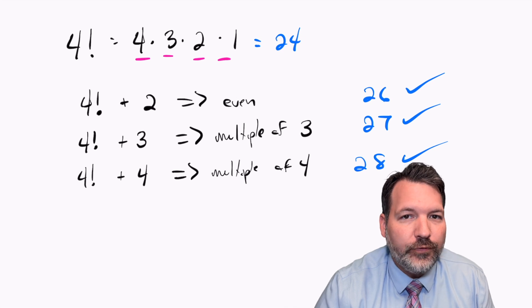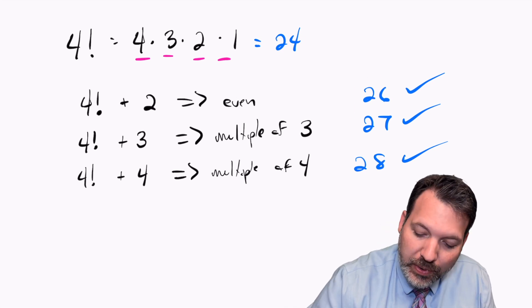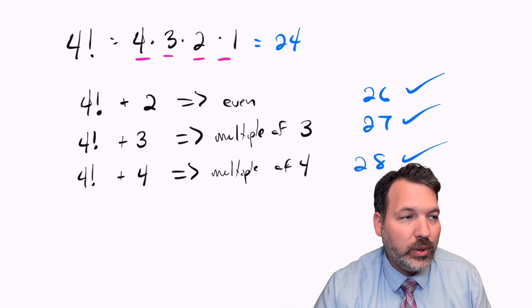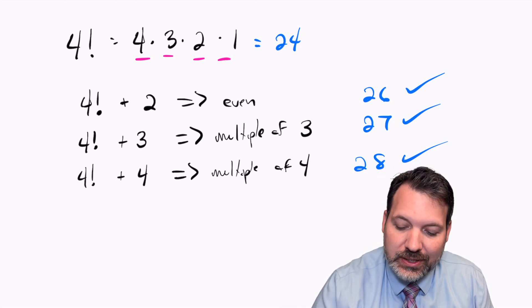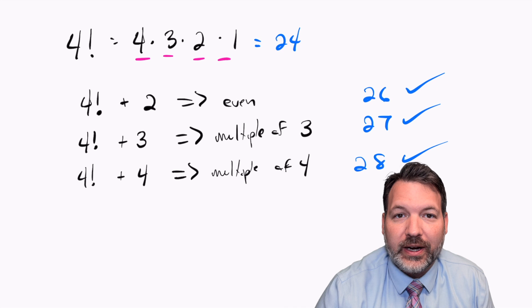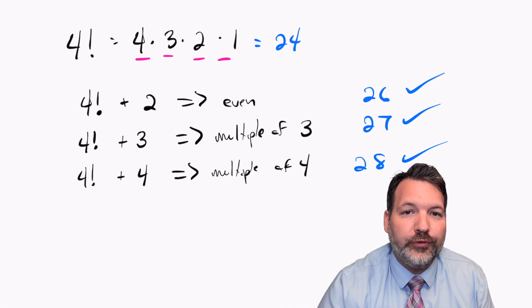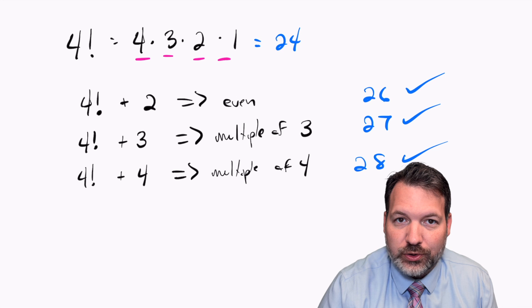What this means is that using 4 factorial, we have shown that there must be at least three consecutive composite numbers, three numbers in a row that are not prime, somewhere a little bit bigger than 4 factorial. And this doesn't only go for 4 factorial, this goes for any multiple of 4 factorial.